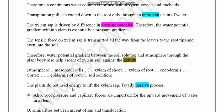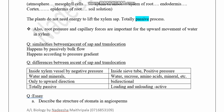Plants do not need any ATP energy for the upward movement of xylem sap, so it is entirely a passive process. In contrast, phloem translocation loading can sometimes be an active process. Root pressure and capillary forces of water within the xylem are also important for the upward movement of water within the xylem to some extent.